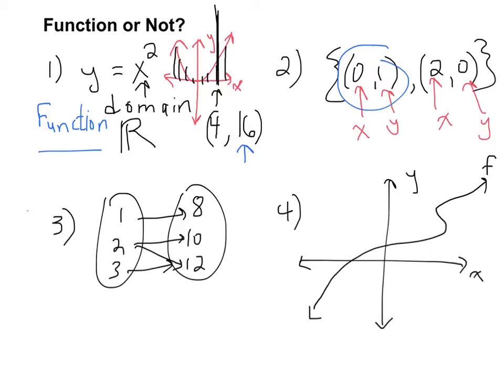Okay? And obviously, the 2 only has a 0 as an output. So, once again, it is the case that each of those inputs has exactly one output. And that's what we want, to declare something a function.